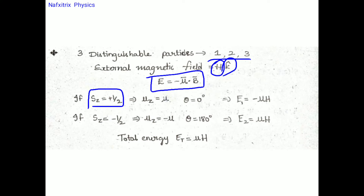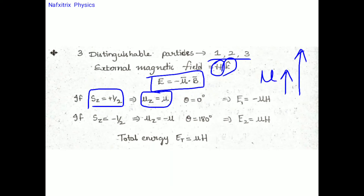Now let's find the possible energies. When sz = +1/2, μz = +μ (given in the question). The magnetic field and magnetic moment are both in the same direction — parallel — so the angle between them is 0°. Thus μ·B = μB cos0° = +μH, and the energy E = −μ·B = −μH.